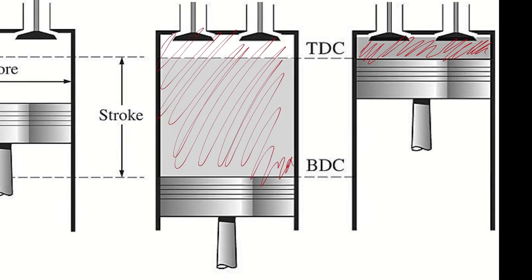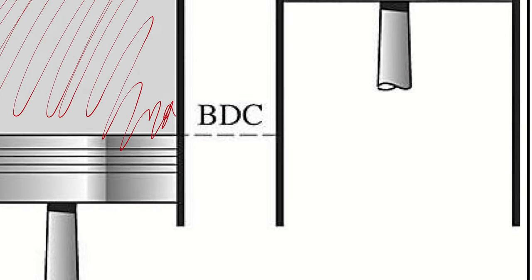Bottom dead center and top dead center refer to the fact that our piston is connected to a connecting rod on the crankshaft. So if I just draw it like this for a moment, it's not super accurate, but as the crankshaft goes around, the piston goes up and down.